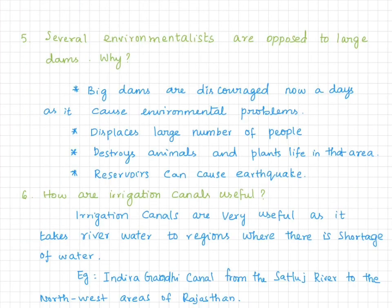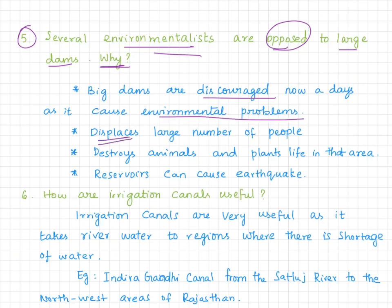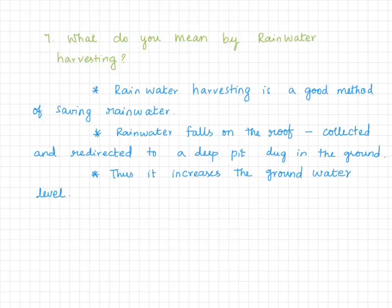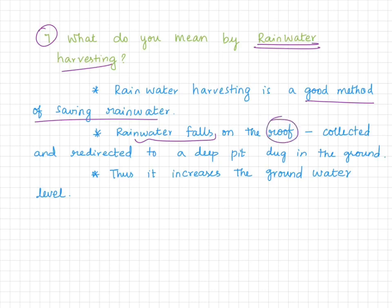Question 4: what is hydroelectricity? Hydro means water — producing electricity from falling water is called hydroelectricity. Question 5 on disadvantages of dams we have already discussed. Question 6: what do we mean by rainwater harvesting? Rainwater harvesting is a method of saving rainwater — water falls on the roof, is collected and redirected to a deep pit dug in the ground, thus increasing the groundwater level.